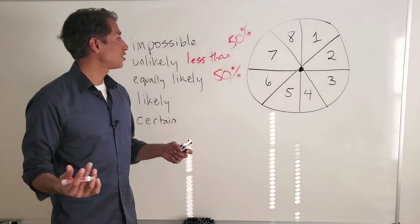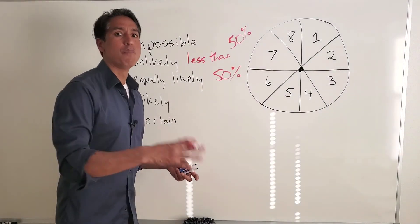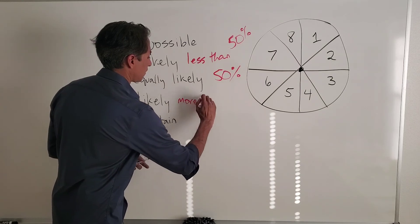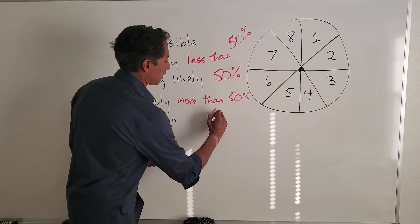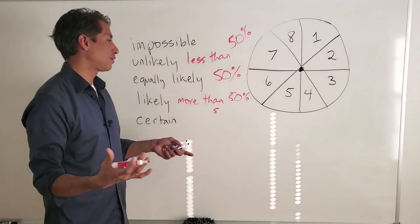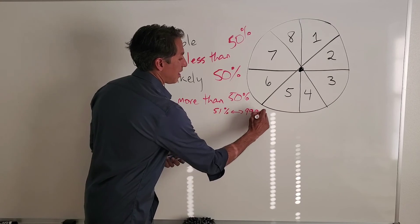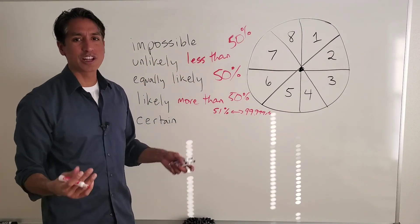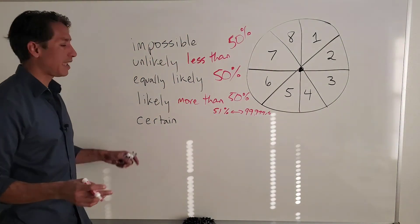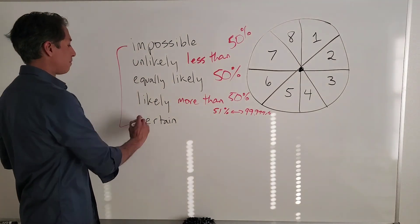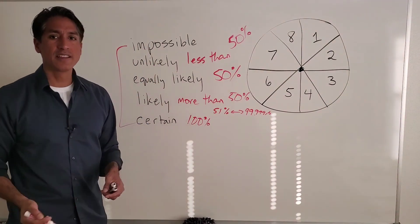The next one here is likely. So now we have less than 50%. We have 50%. And now we have likely, which is going to be more than 50%. And that pretty much goes from like 51% all the way up to 99.999. You know, pretty much like almost a sure thing. That would be something we would consider likely. And then we have certain, which is the direct opposite of impossible, which is just, it's going to happen. And certain is 100%.